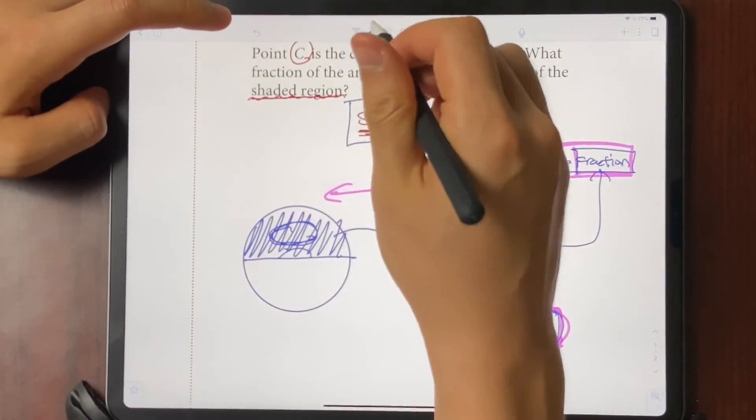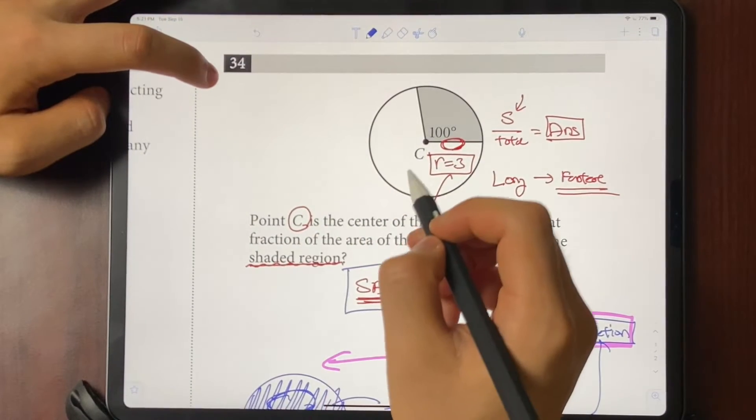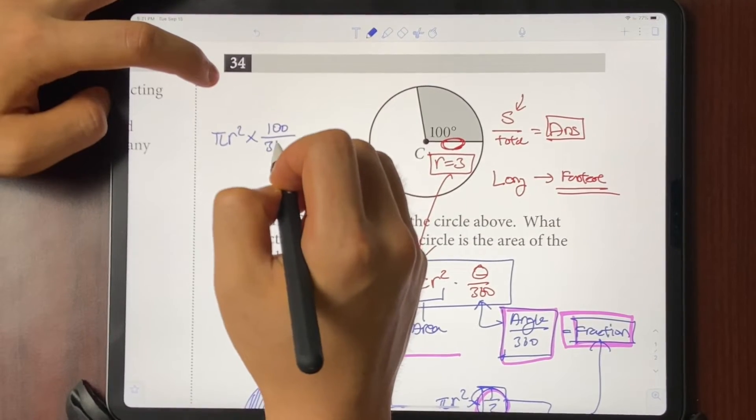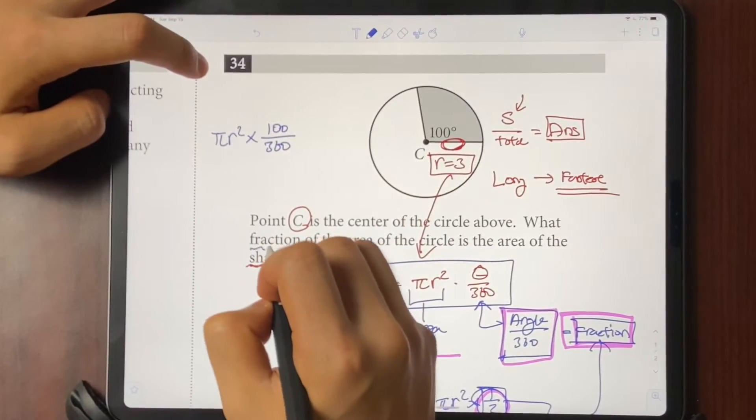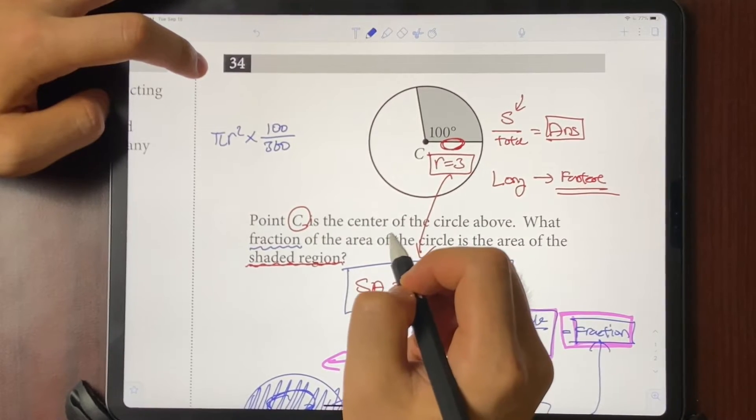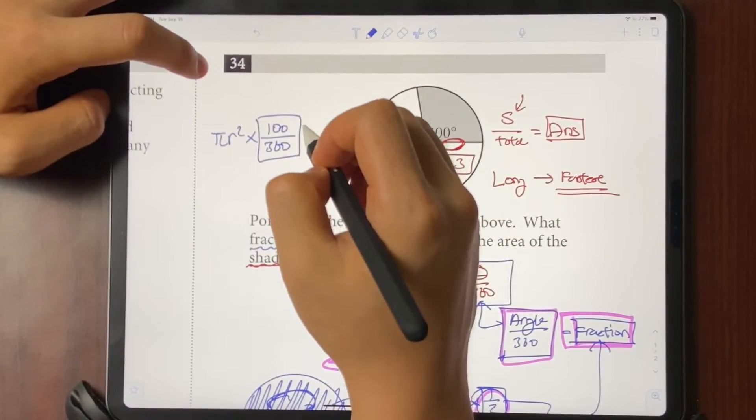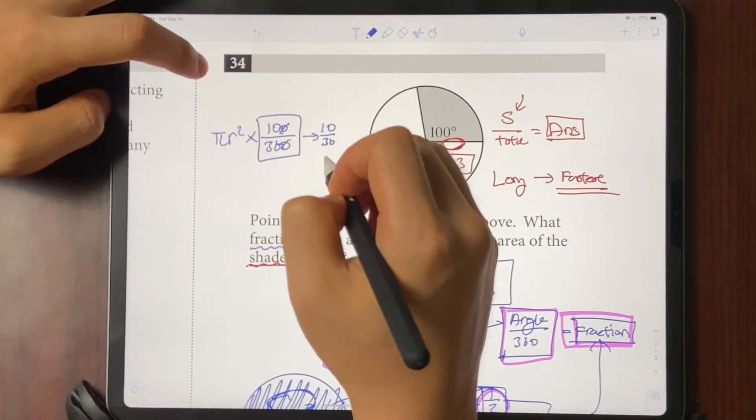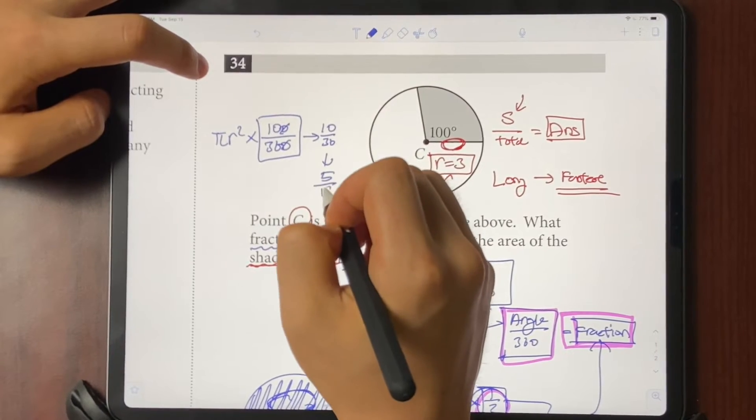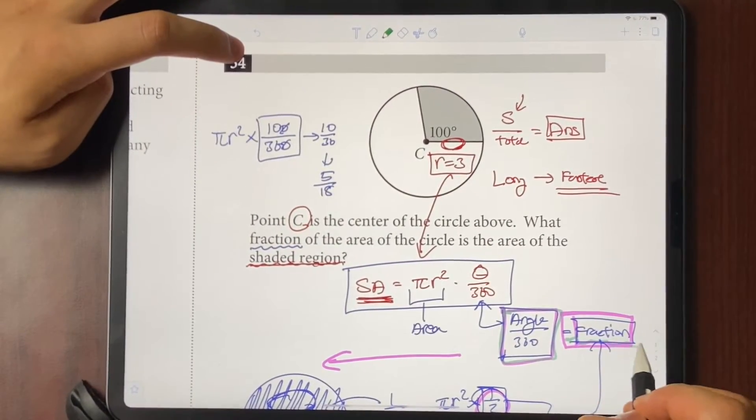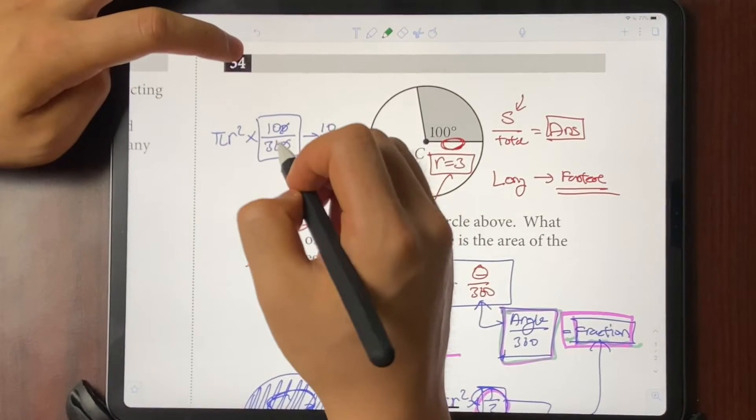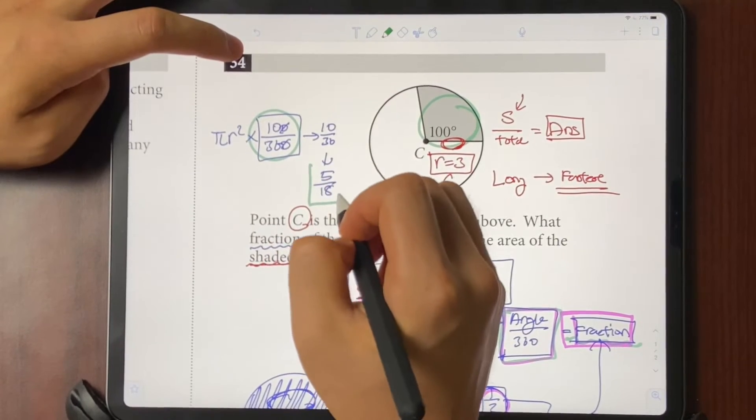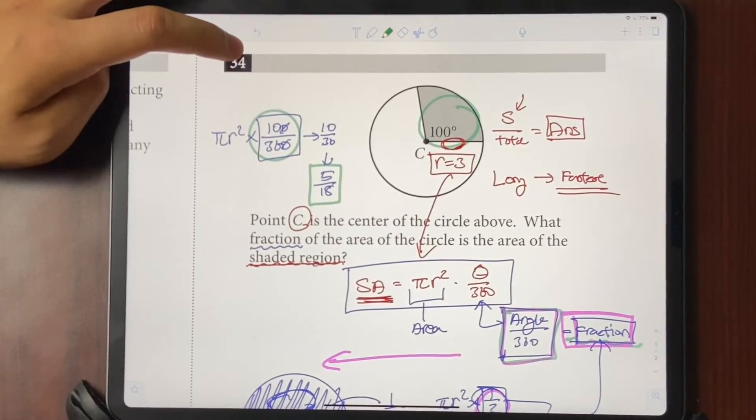And if we were to apply the same logic to our question right here, to find the area of the shaded region, it would be just pi r squared times 100 over 360, which is this angle right here. And to find out what fraction of the area of the circle it is, we just have to look at this number right here, which is the angle over 360. If we were to simplify this, it would become 10 over 36, which becomes 5 over 18. Because angle over 360 portion tells us what fraction of the circle we're finding, we can look at 100 over 360 and say that this shaded portion right here is going to be just 5/18th of the whole circle's area.